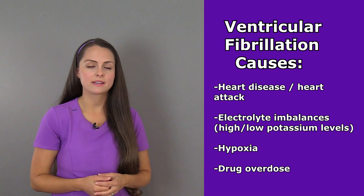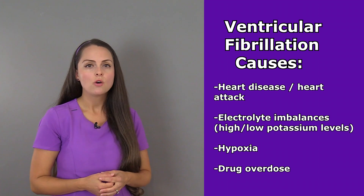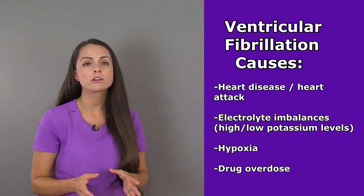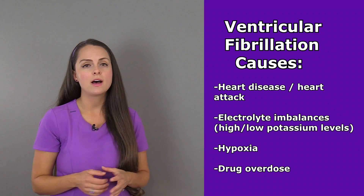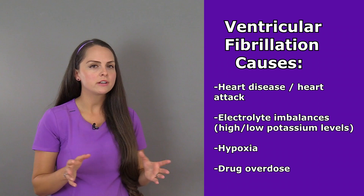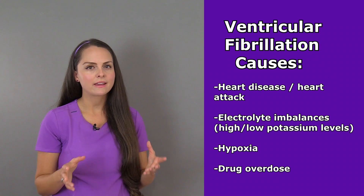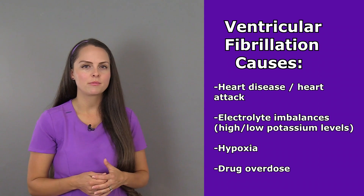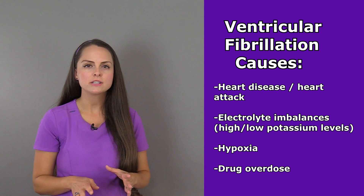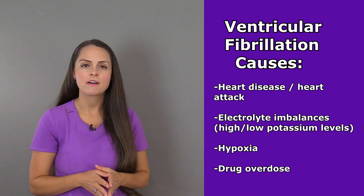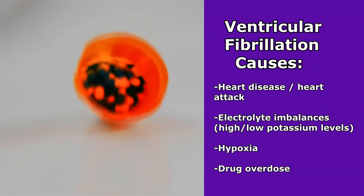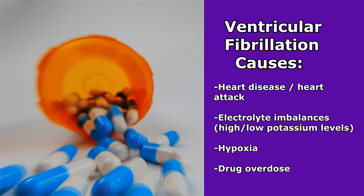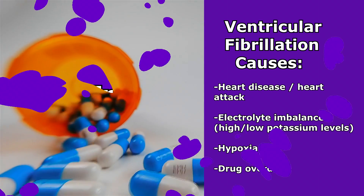In addition, hypoxia can lead to this, which is where we have low levels of oxygen in the blood. There are a lot of diseases that can cause low levels of oxygen in the blood, especially diseases that affect the respiratory system. And lastly, drug overdose can lead to this rhythm as well.